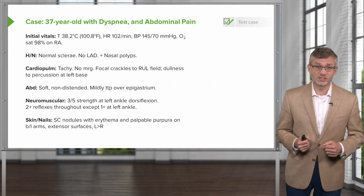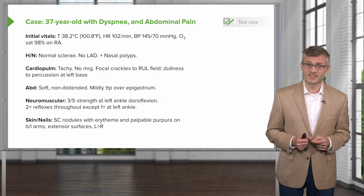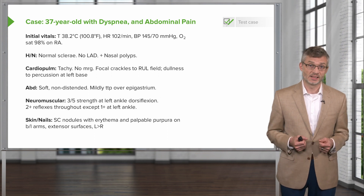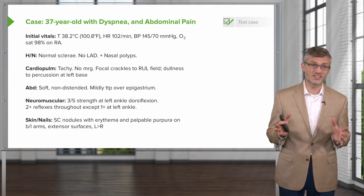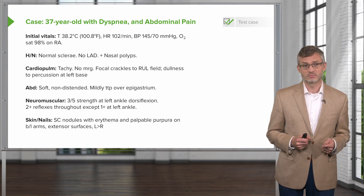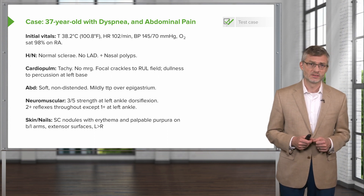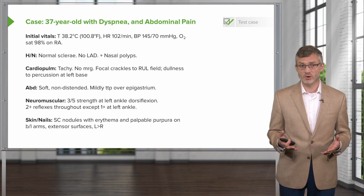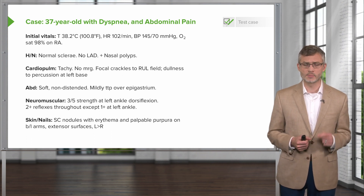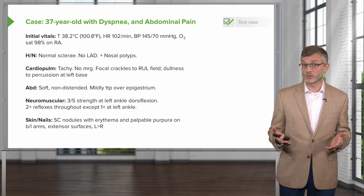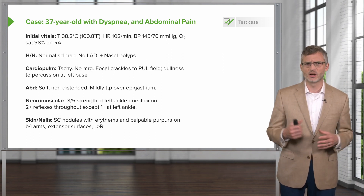Now let's go into the physical exam. She has a temperature of 38.2 degrees Celsius, so she is febrile. Heart rate is tachycardic at 102. Blood pressure looks okay, and she is saturating well on room air. Normal sclera, no lymphadenopathy, and the examiner notes some nasal polyps. She's tachycardic with no murmurs, rubs, or gallops. We find some focal crackles in the right upper lung field, and dullness to percussion at the left base — something's going on in multiple lung fields.